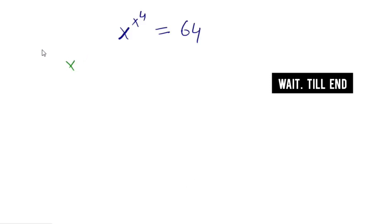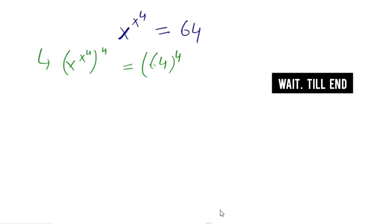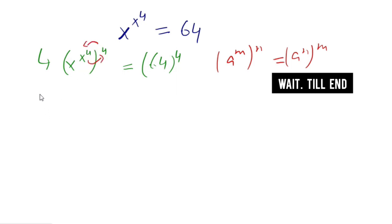In order to solve this type of problem, we take the power 4 on both sides, so x^(x^4) whole power 4 is equal to 64^4. We also know the identity that a^(m·n) is equal to a^(mn). On the left side, we replace x^4 by 4, so it can be rewritten as x^4 whole power x^4.